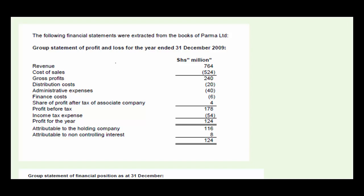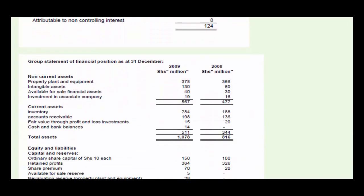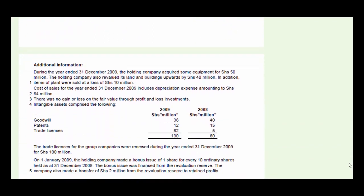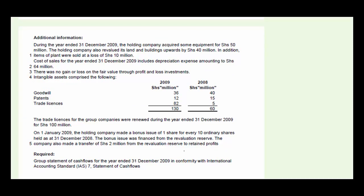In this question we'll be looking at the preparation of the statement of cash flows for Palmer Limited. We're given the statement of P&L for the year, then the statement of financial position, and additional information. We are required to prepare the group statement of cash flows for the year ended 31st December 2009 in conformity with IAS 7 Statement of Cash Flows.